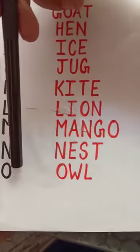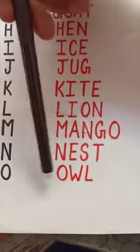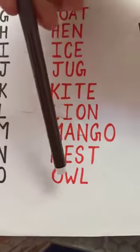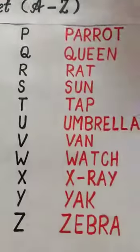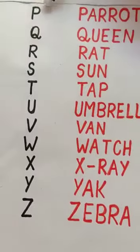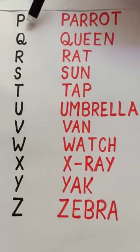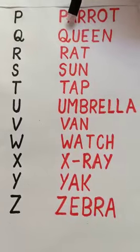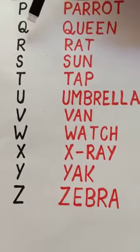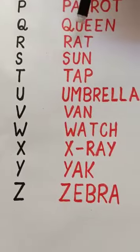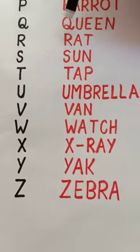This is O. O for owl. This is P. P for parrot. This is Q. Q for queen.